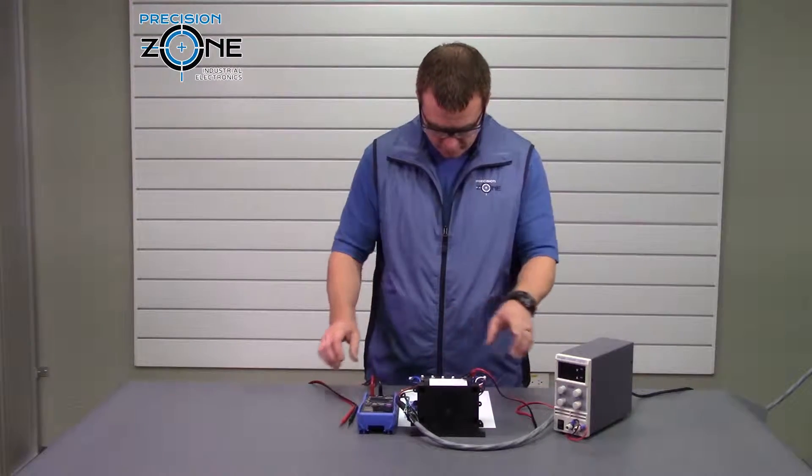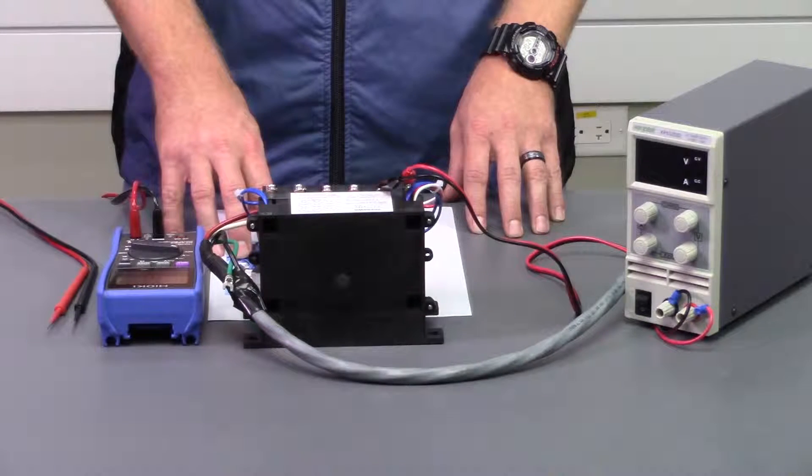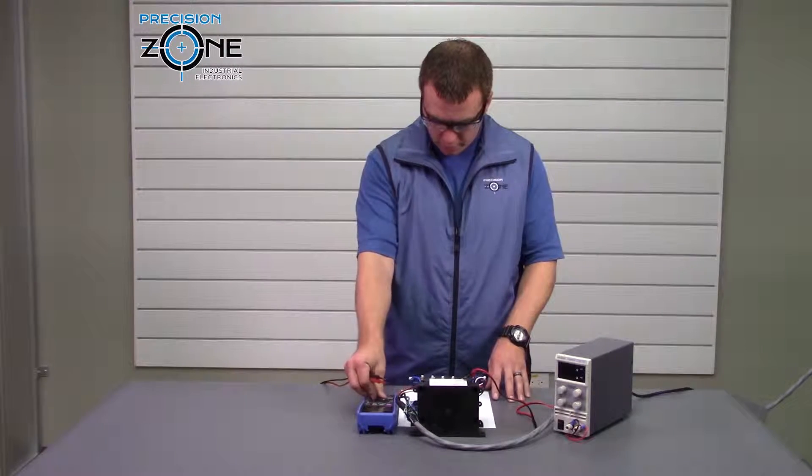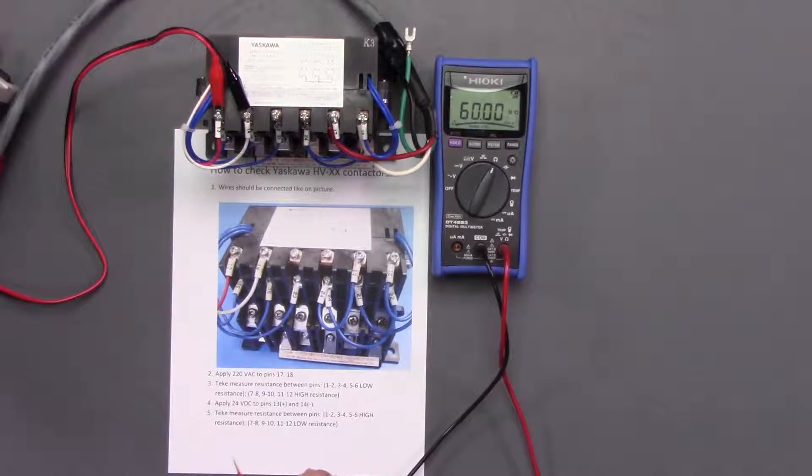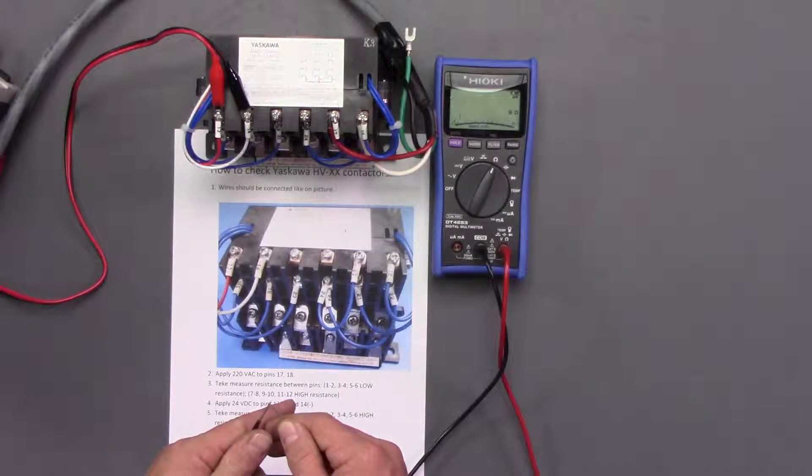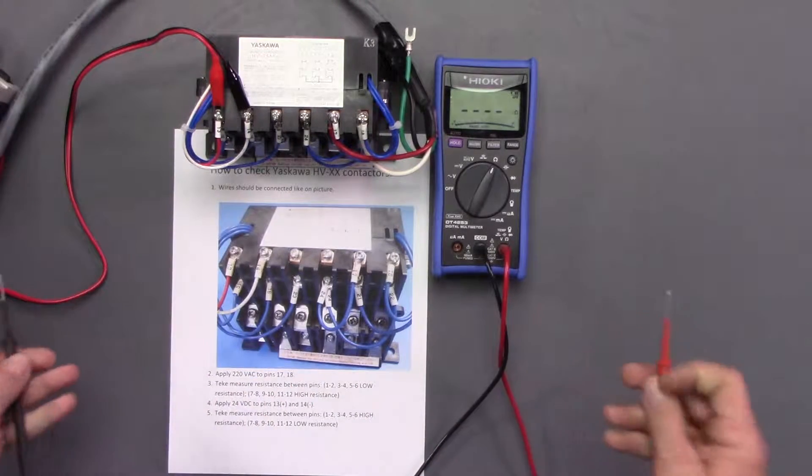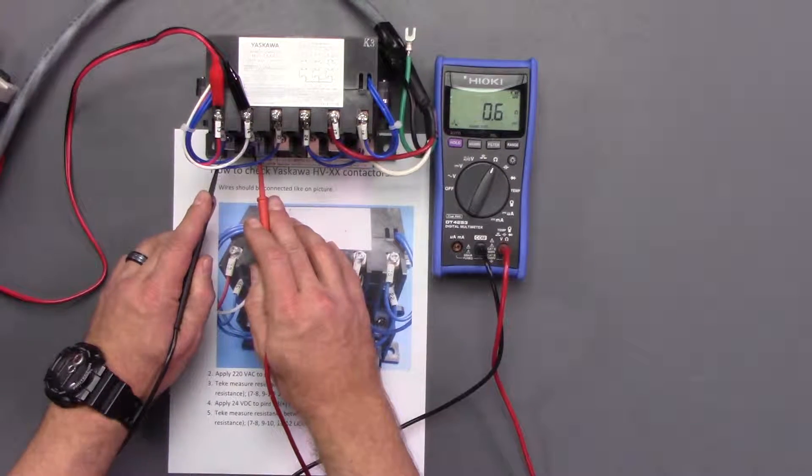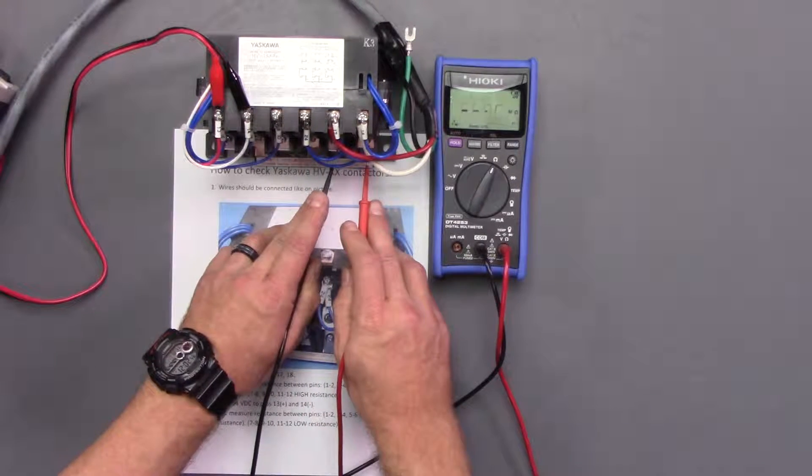So now that we know we have this energized, this procedure that's here in front of me comes right from us at precisionzone.com. We're going to move to the resistance function and it says take a measurement resistance between 1 and 2, 3 and 4, and 5 and 6, low resistance. So we're just going to touch our leads together and see we're getting 0.6. So it shouldn't be much more than that. 1 and 2, 3 and 4, 5 and 6.